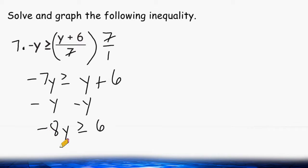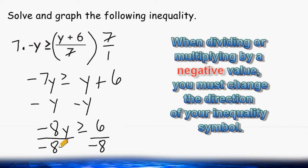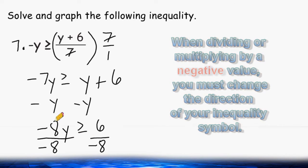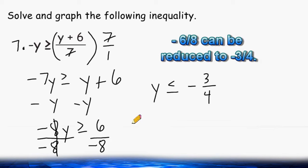At this point, we have negative 8y is greater than or equal to 6. To isolate the variable y, we divide this side by the coefficient negative 8, because anything divided by itself is positive 1. We have to balance our inequality by dividing the other side by negative 8 as well. One thing to remember when dealing with inequalities: whenever you divide one side by a negative value, the direction of your inequality symbol is going to switch. After canceling out the negative 8s, we have positive 1y is less than or equal to positive 6 divided by negative 8, which equals negative 3/4. When a positive is divided by a negative, the result will always be a negative value.